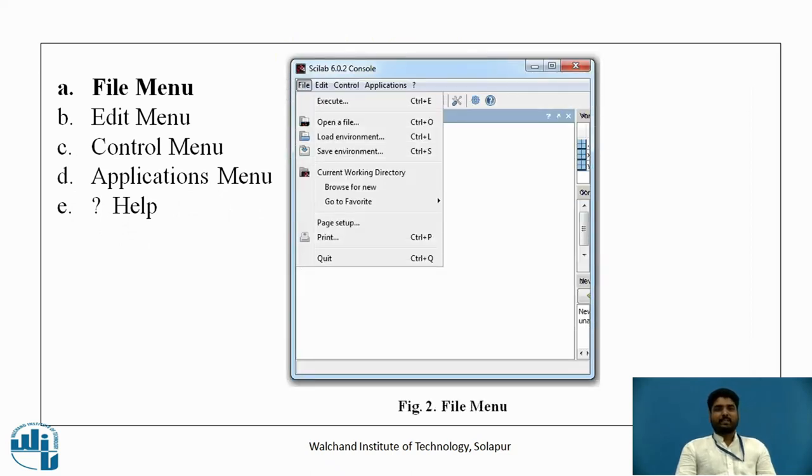This is a screenshot of the Scilab new version that is 6.02. At the fresh window, it shows the console window. If you go with the file menu bar, the options available on the file menu bar are execute, open a file, load environment, save the environment.